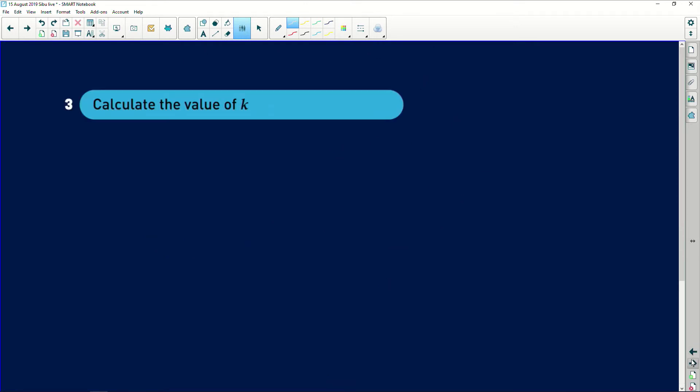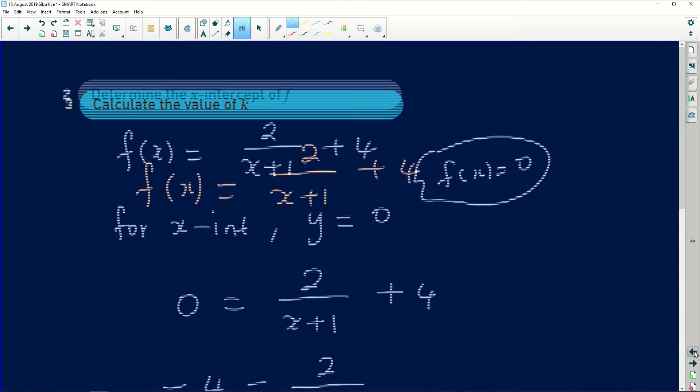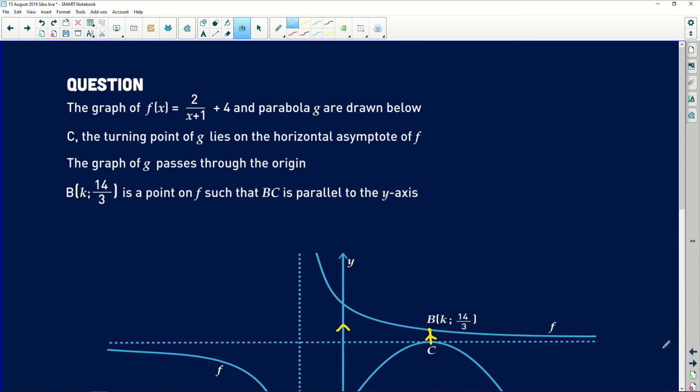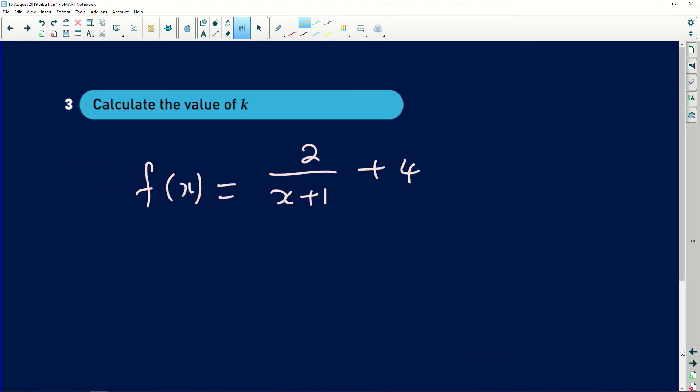Let's go to the next part that says calculate the value of k. What is this k? Well, k is a point in the graph of f. Remember, f(x) is given to us as 2/(x+1) + 4. So if you remember very well, if we may go back to the actual graph that was sketched for us, there's k right there at the top. The coordinate of B is k and 14/3.